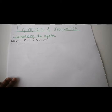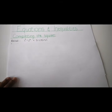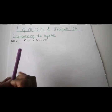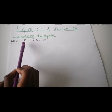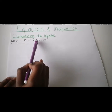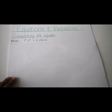Recall, remember when we used to get an equation that looks like i squared minus j squared, and we knew that we had to do a difference of two squares, and it would be i minus j times i plus j.